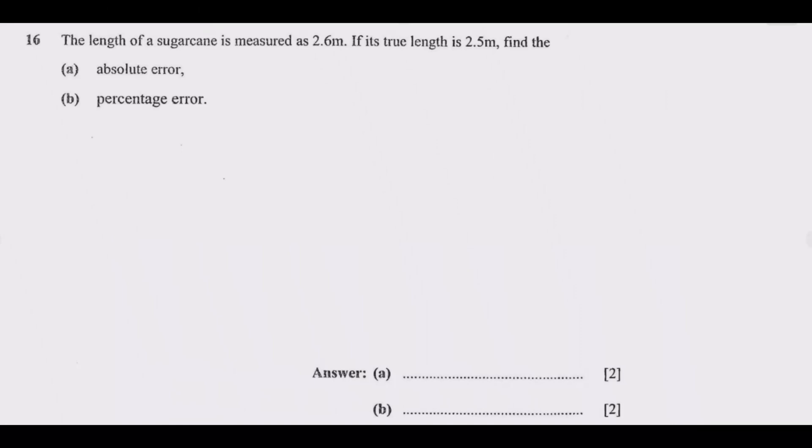The length of a sugar cane is measured as 2.6 meters. If its true length is 2.5 meters, find the (a) absolute error, (b) percentage error. That's four marks in total. Again you see questions on measurement will ask you to find absolute error, percentage error. If you understand the concept I'm explaining here, this question should be easy for you.